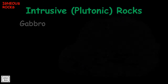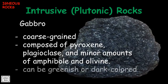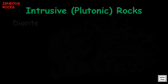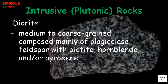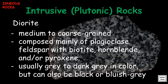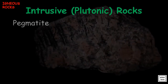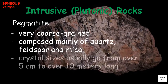Another intrusive rock is gabbro: it is coarse-grained, composed of pyroxene, plagioclase, and minor amounts of amphibole and olivine, and can be greenish or dark colored. Diorite is medium to coarse-grained, composed mainly of plagioclase feldspar with biotite, hornblende, and ore or pyroxene; it is usually gray to dark gray in color, but can also be black or bluish gray. Pegmatite is very coarse-grained, composed mainly of quartz, feldspar, and mica; its crystal sizes usually range from over 5 centimeters to over 10 meters long.